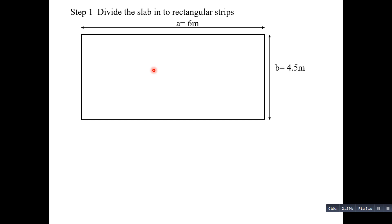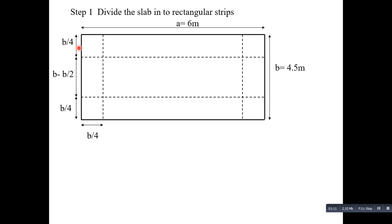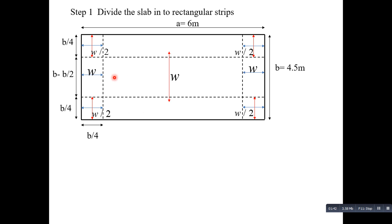The first step is to divide the slab into rectangular strips. Using the strip method, we divide the slab into edge strips and a middle strip. Edge strips have a dimension of b/4 on each side, and the middle strip is b/2. On the edge strips, the load is transferred half in both directions — w/2 in the vertical and transverse directions at the four corners — and the remaining load is transferred to the shortest direction, w in the x-direction.